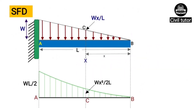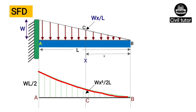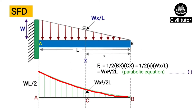To draw the SFD, we start from the baseline AB. Since shear force at point B is 0, we mark that point as 0, and at point A the shear force is WL/2, so we draw WL/2 to some scale above the baseline at A. We then join these points by a parabolic curve, as indicated by equation one.